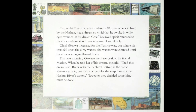One night, Oweana, a descendant of Weewa — and descendant means child, grandchild, or great-grandchild of someone — who still lived by the Nashua, had a dream so vivid that he awoke in wide-eyed wonder. In his dream, Chief Weewa's spirit returned to the river and saw it as it was now, still and deadly. Chief Weewa mourned for the Nashua, but where his tears fell upon the dirty waters, the waters were cleansed until the river once again flowed freely. The next morning, Oweana went to speak to his friend Marion. When he told her of his dream, she said, 'I had this dream also. River with the pebbled bottom is the name Weewa gave it. But today, no pebbles shine up through the Nashua River's waters.' Together, they decided something must be done.